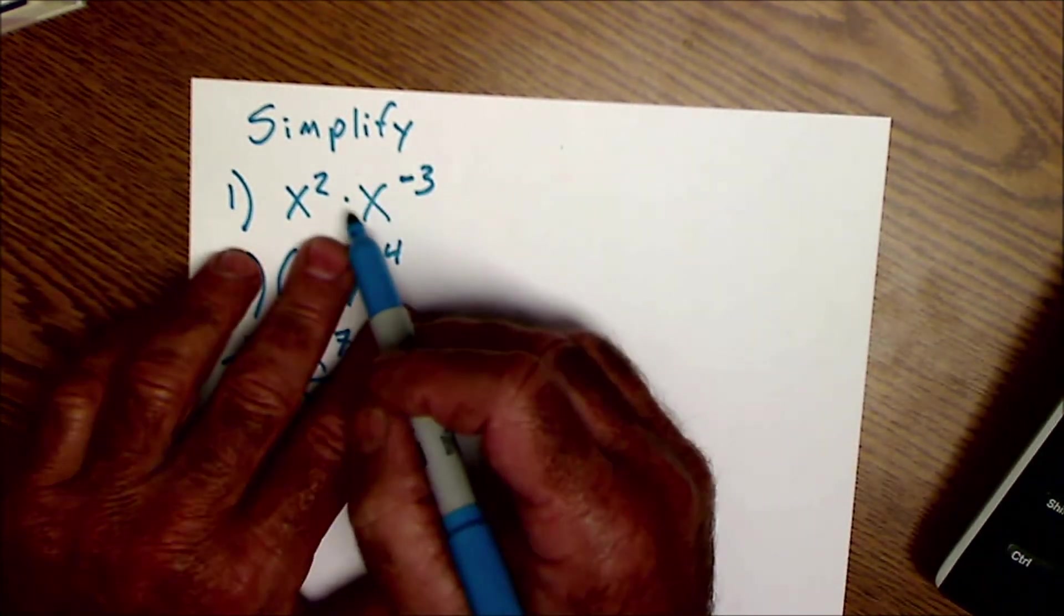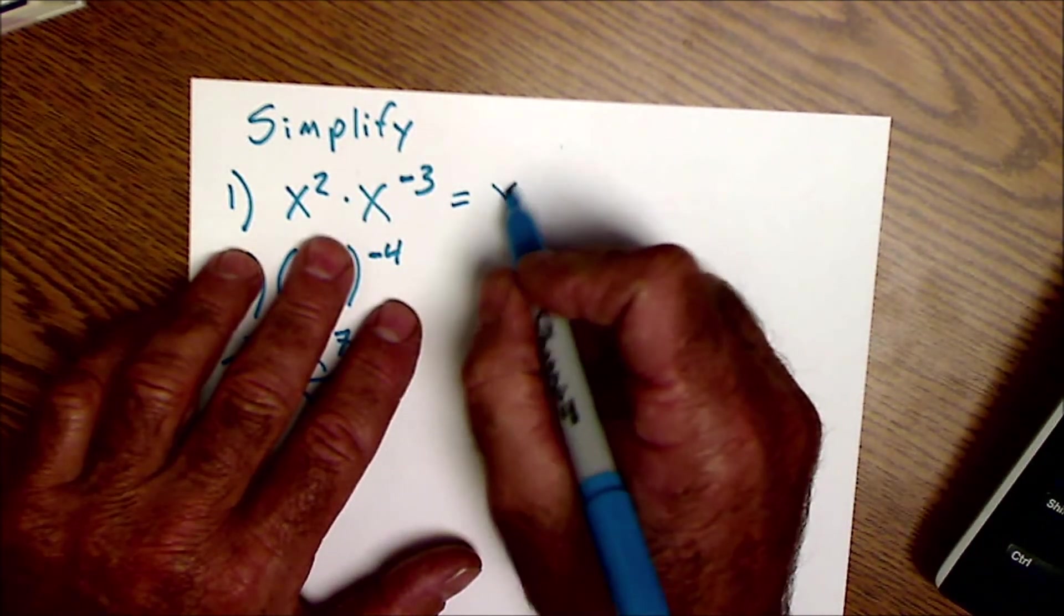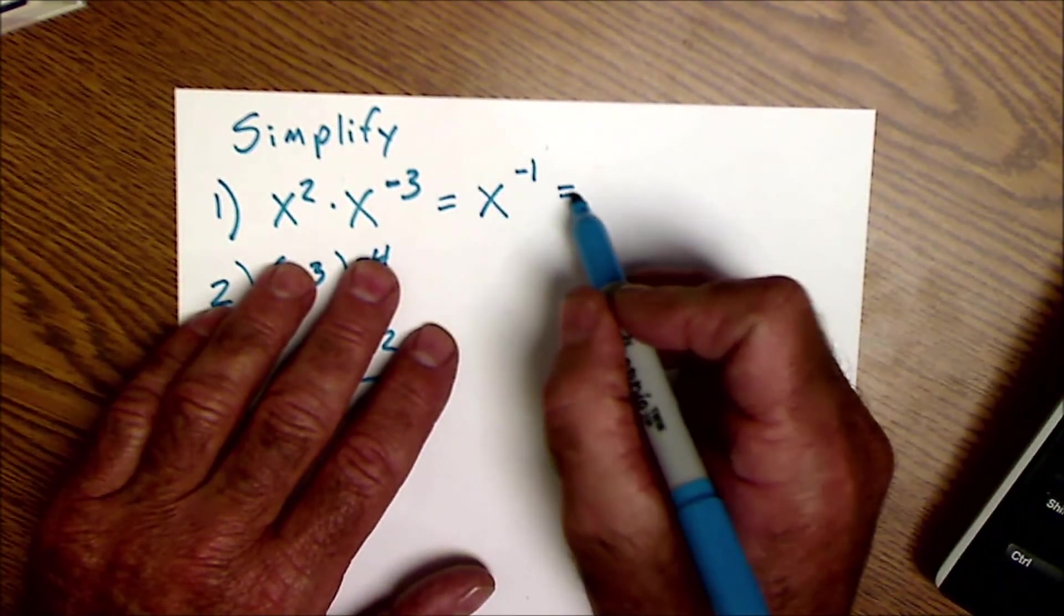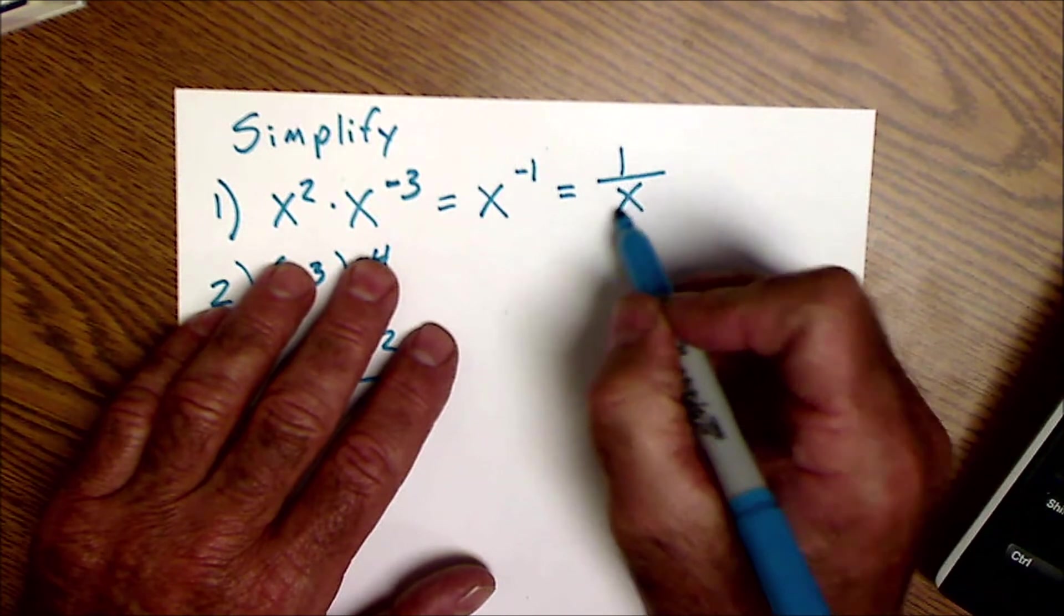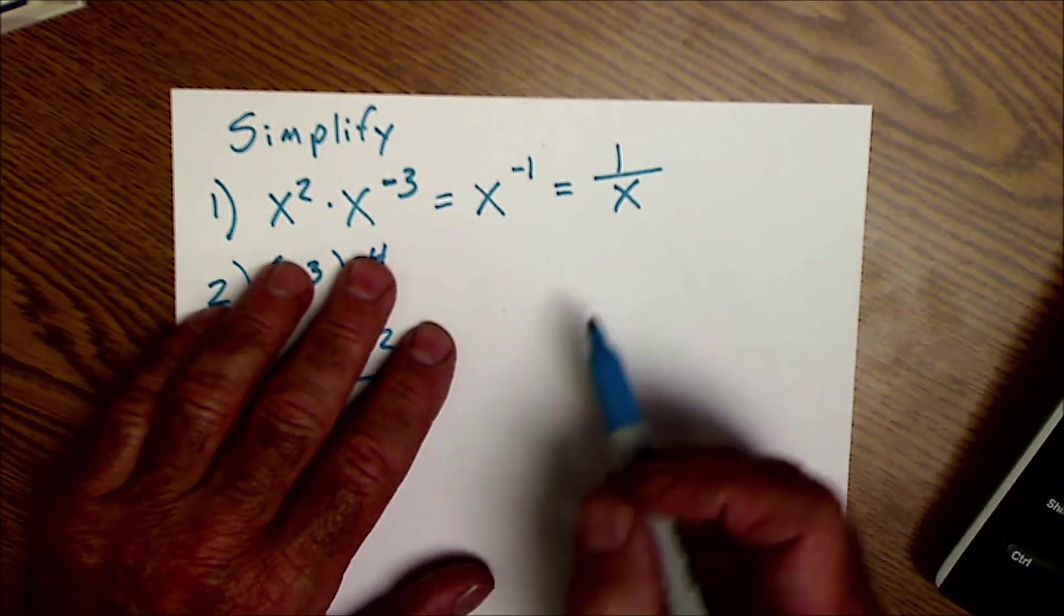Okay, hopefully you did them. Here I'm multiplying, I'm going to add these two things together. So a 2 and a negative 3 is a negative 1. To make that positive, I put it in the denominator and I have 1 over x to the first. I don't need to write a 1 on there, it's implied it's a 1.